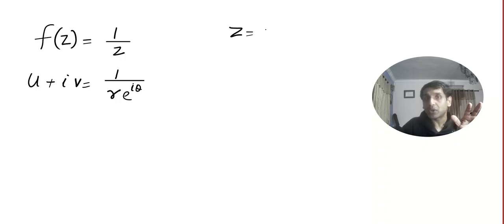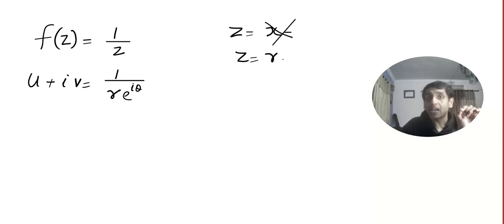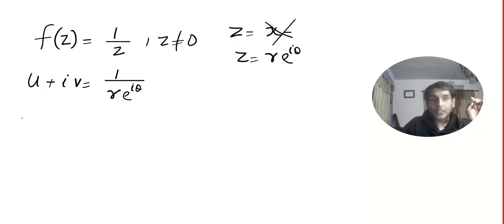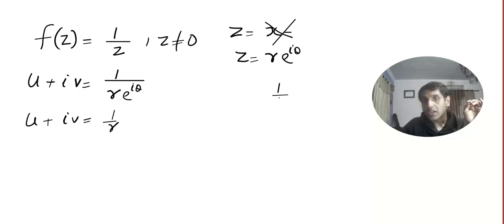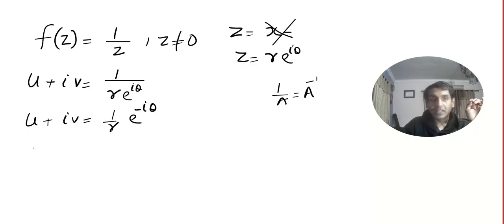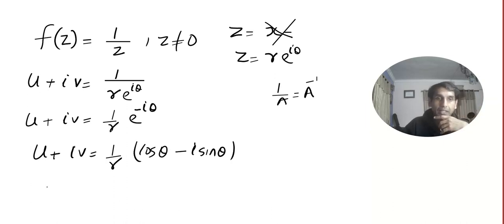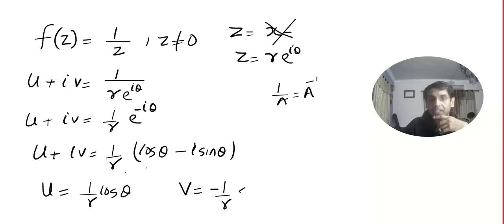So u + iv = 1/(r·e^(iθ)) = r^(−1)·e^(−iθ) = (1/r)·(cos θ − i sin θ). Distributing, we get u = (1/r) cos θ and v = −(1/r) sin θ.